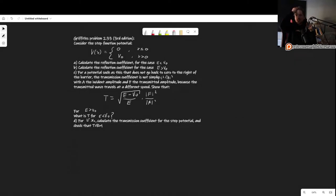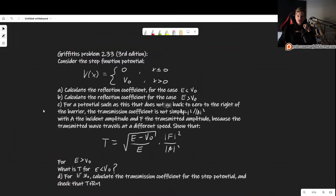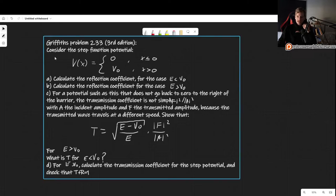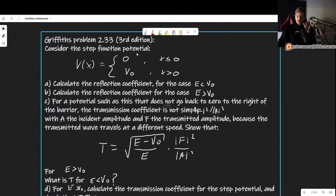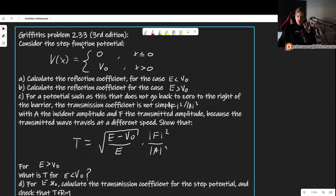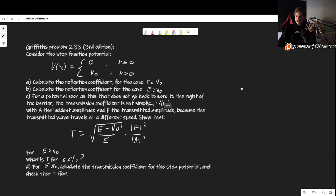Welcome! In this video, I'll show you how to solve problem 2.33 as it appears in the third edition of Griffith's Introduction to Quantum Mechanics. This problem considers the step function potential, where the potential is 0 if x is less than 0, and v0 if x is greater than 0.